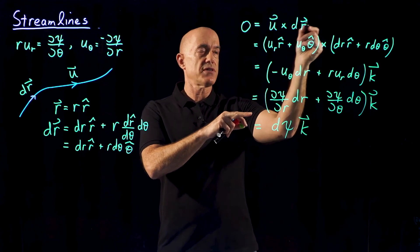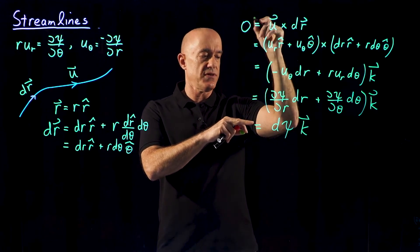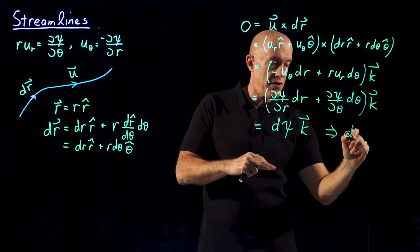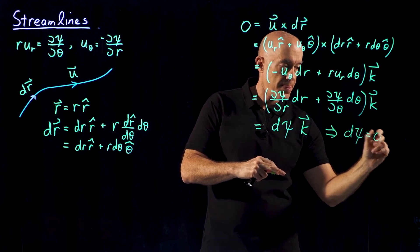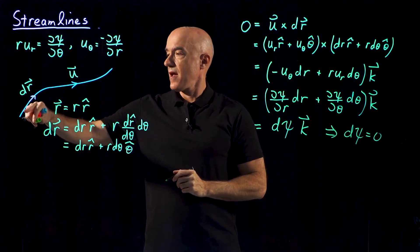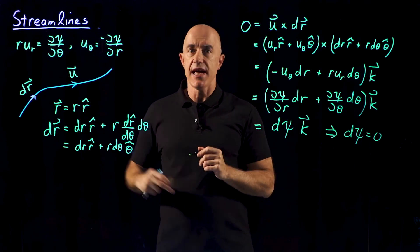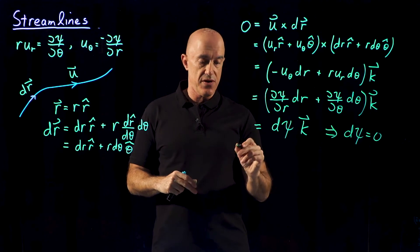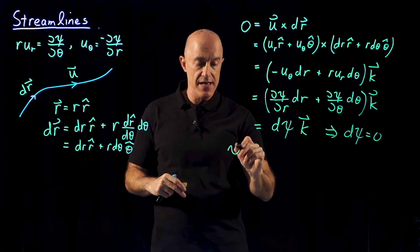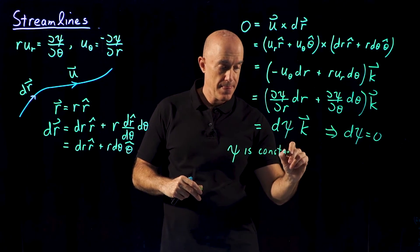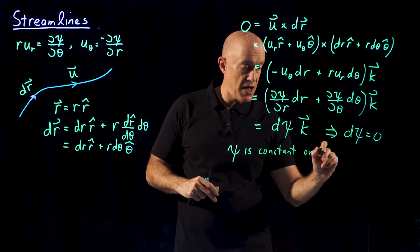So because u cross dr is equal to 0, we get d psi then is equal to 0. So on the streamline, psi doesn't change. d psi is equal to 0. So therefore, psi is constant on streamlines.